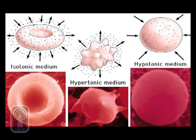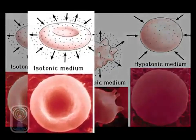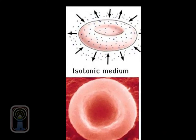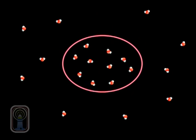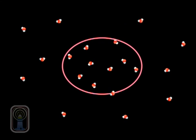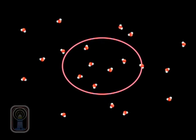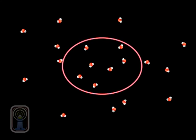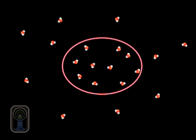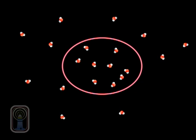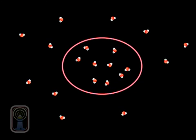If a solution is isotonic, there is an equal concentration of solute both inside and outside of the cell. Although water molecules continuously move into the cell and out of the cell, the concentration on both sides of the semipermeable membrane remains the same.